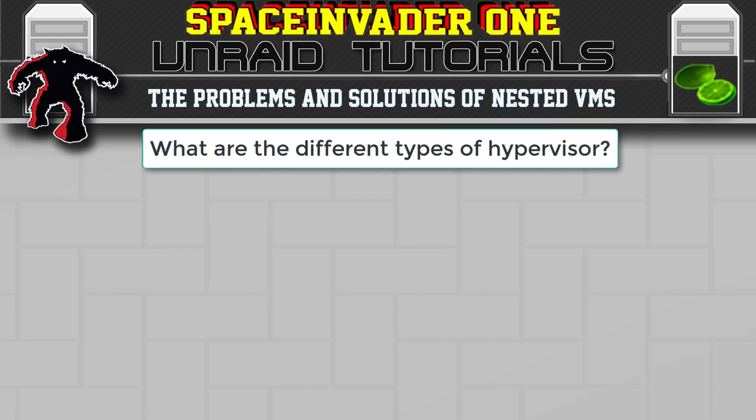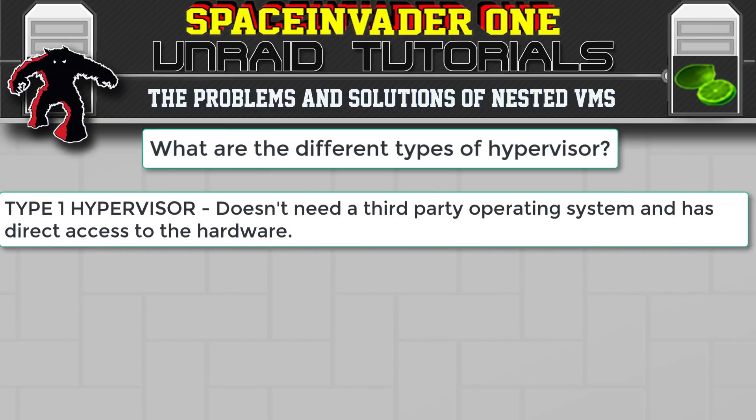Before we start, let's talk about the differences between a Type 1 hypervisor and a Type 2 hypervisor. A Type 1 hypervisor runs on the computer without the need for a third-party operating system and has direct access to the hardware. Examples are ESXi and KVM. Some people argue that KVM isn't a Type 1 hypervisor because it's part of the operating system, but KVM is actually the virtualization layer in the Linux kernel, and just the same as ESXi it only runs on one kernel and has direct access to the hardware.